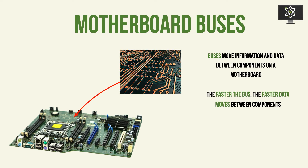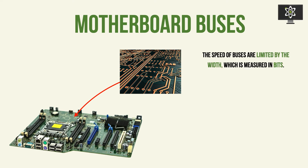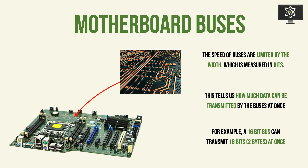Essentially, the faster the data is transmitted through these buses, the more data and the faster the data moves between components. So the speed of a motherboard — really the speed of your computer — is called the bus speed. The speed of these copper wires is limited by the width of the individual copper wires etched onto the motherboard, and this speed is measured in bits. It tells us how much data can be transmitted by the buses at once. For instance, if you've got a 16-bit bus, that means the bus can transmit 16 bits of data at once, which converts to about two bytes.